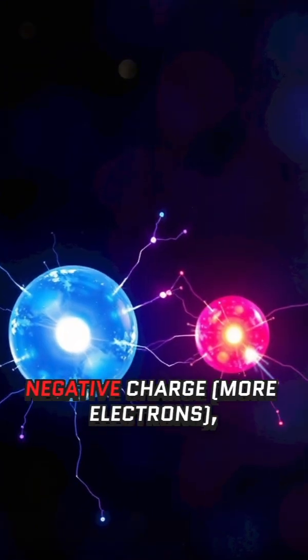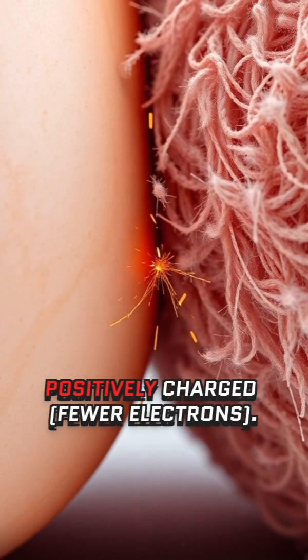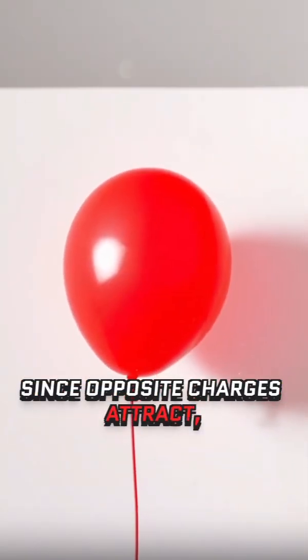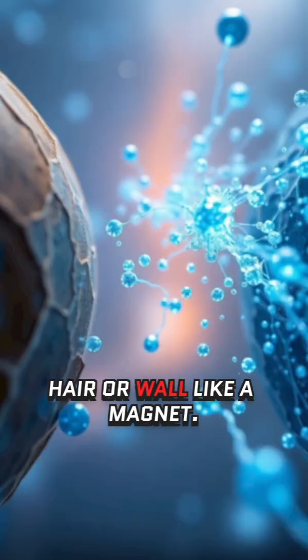One object ends up with a negative charge (more electrons), while the other becomes positively charged (fewer electrons). Since opposite charges attract, the balloon clings to your hair or wall like a magnet.